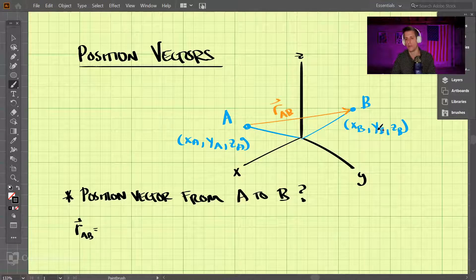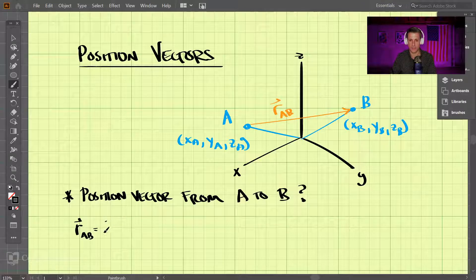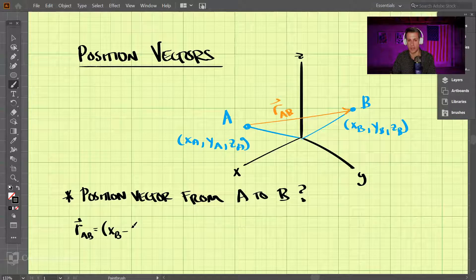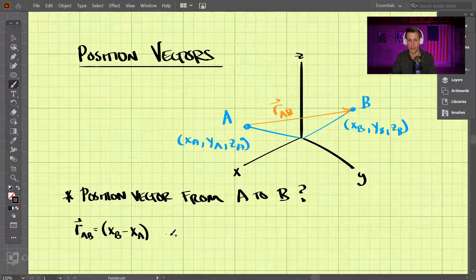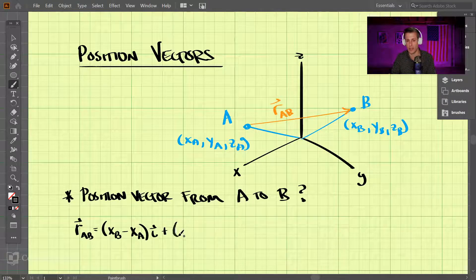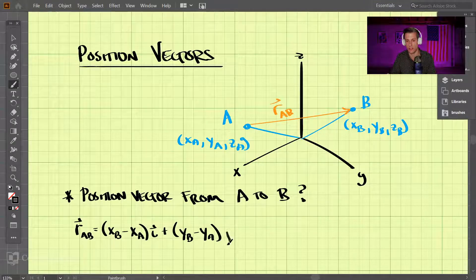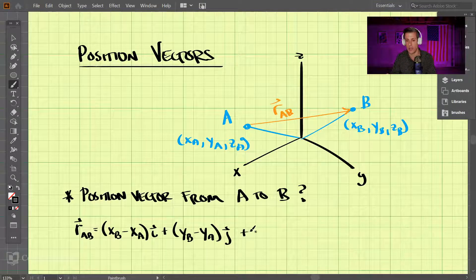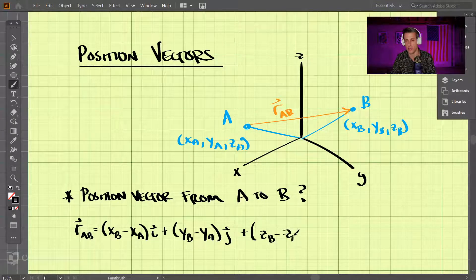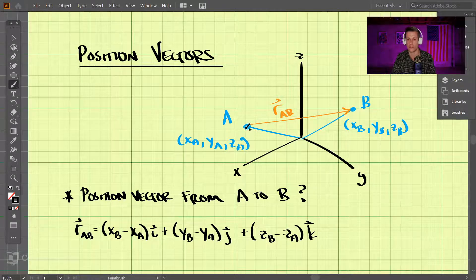So we would take for the x direction we would take x_B minus x_A and that would be in the x direction or i direction. And then we would have y_B minus y_A in the j direction, and then z_B minus z_A in the k direction.